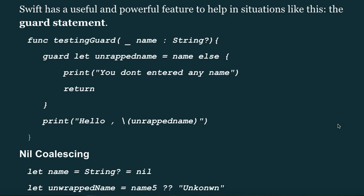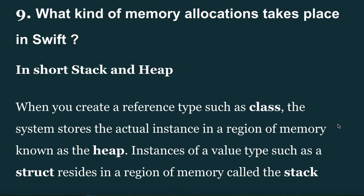Nil coalescing: `let name: String? = nil; let unwrappedName = name ?? "Unknown"`. The double question mark operator provides a default value when the optional is nil.